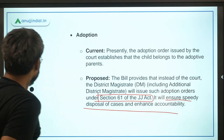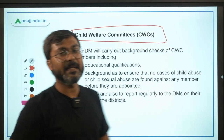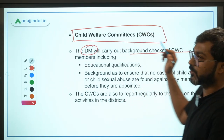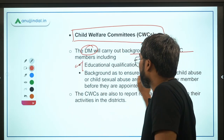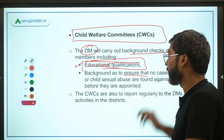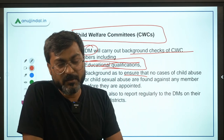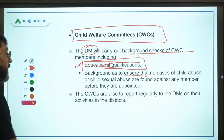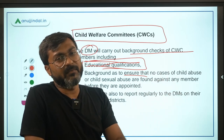Another amendment is about Child Welfare Committees, which will work towards the welfare of the child. The District Magistrate will carry out background checks of the members of these committees — checking their educational qualifications and ensuring no offense has been committed against a juvenile by that member. The Child Welfare Committees will regularly report to the District Magistrate of the district.